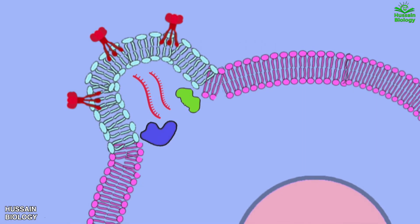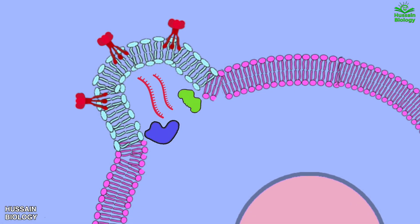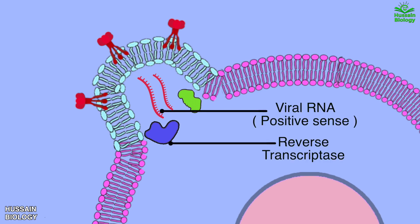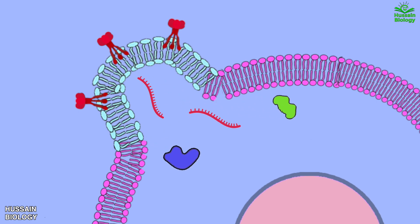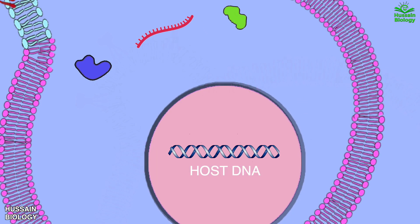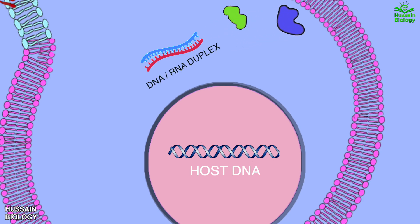Now getting back to the entry of the virus. After entering the host cell, we get the positive sense single-stranded RNA in the host cell, along with some viral proteins. First, the reverse transcriptase enzyme acts on the single-stranded RNA of the virus and synthesizes complementary DNA from it. This enzyme has the ability to synthesize a DNA strand from RNA. We now have a DNA-RNA duplex, which means one strand is DNA and the other is RNA.